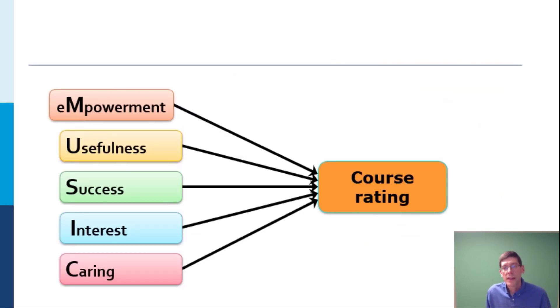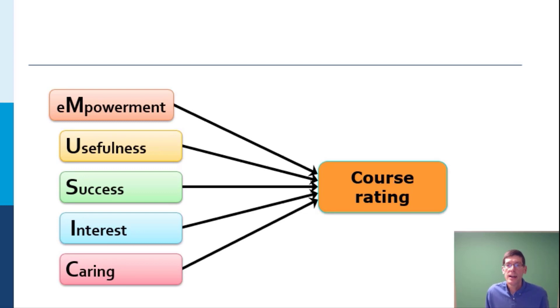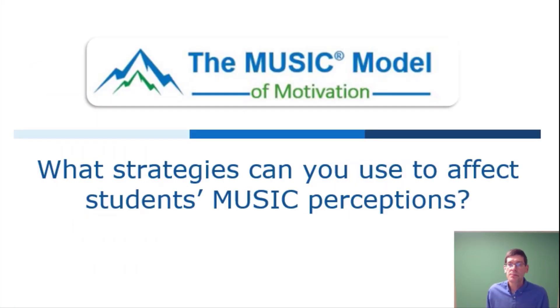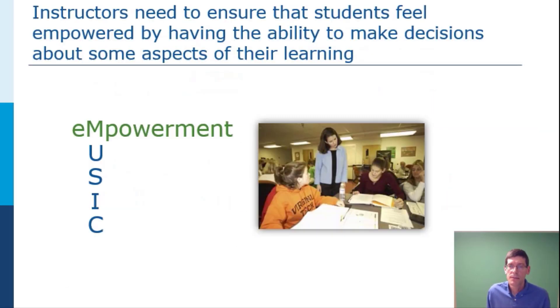One other thing I wanted to mention is that these factors do affect course and student ratings — they're very highly correlated with those. So if you want to improve your course rating, improving these perceptions will also help you with that. So what strategies can you use if you want to improve your instruction?